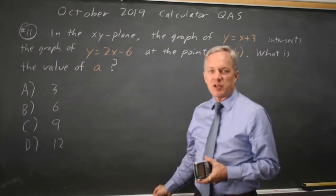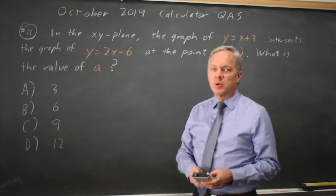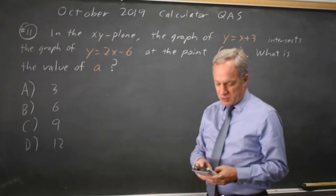The fastest and easiest is using our graphing calculator. Since they're already solved for y equals, I can put x plus 3 into y1 and 2x minus 6 into y2.